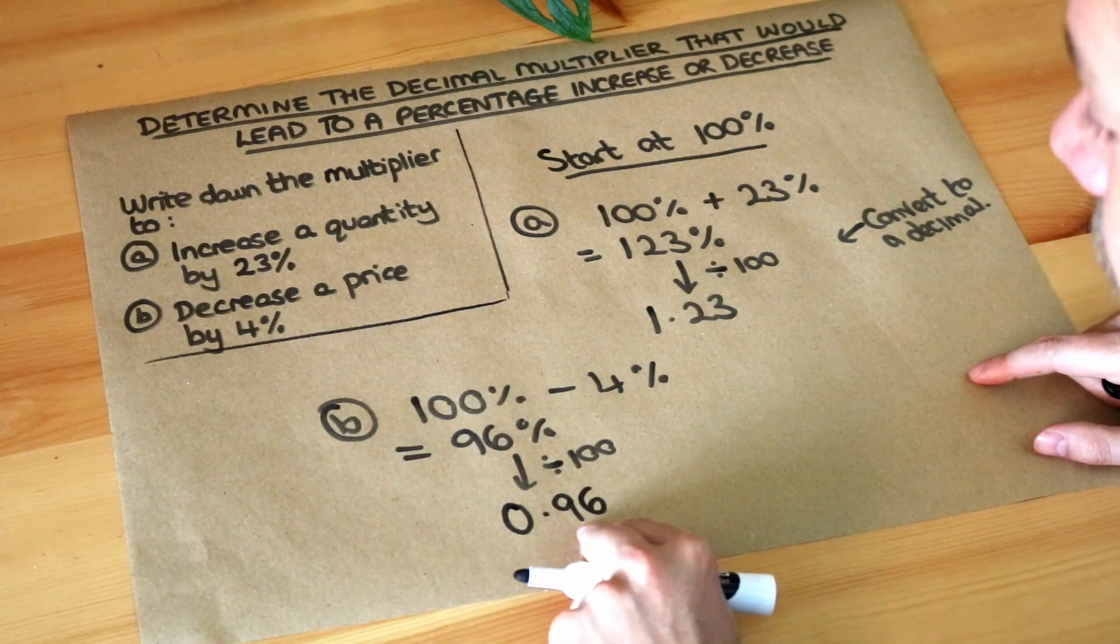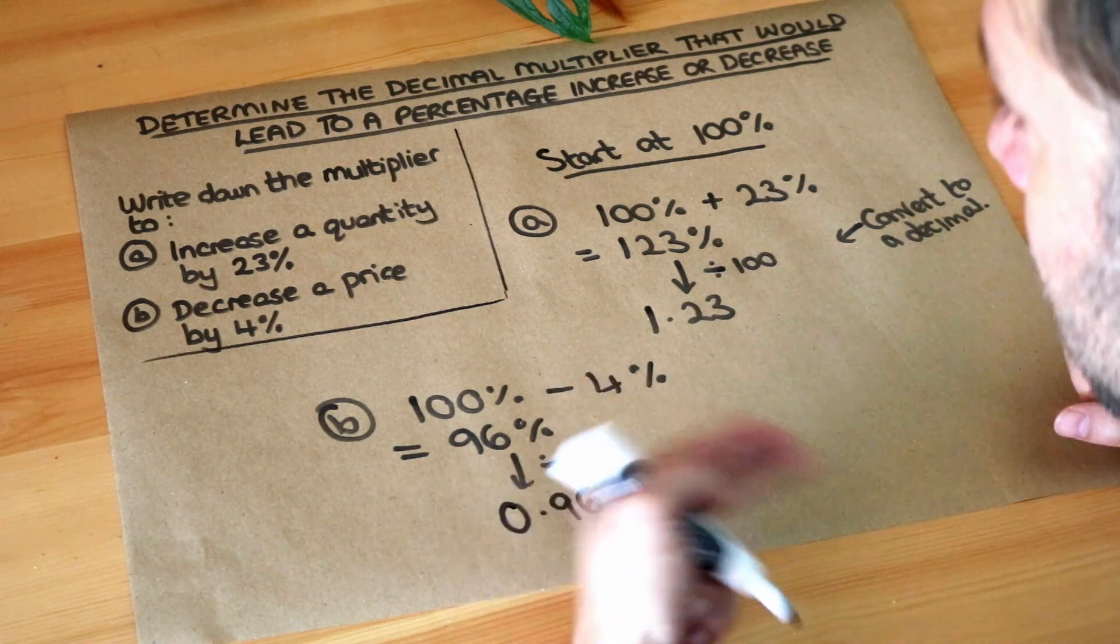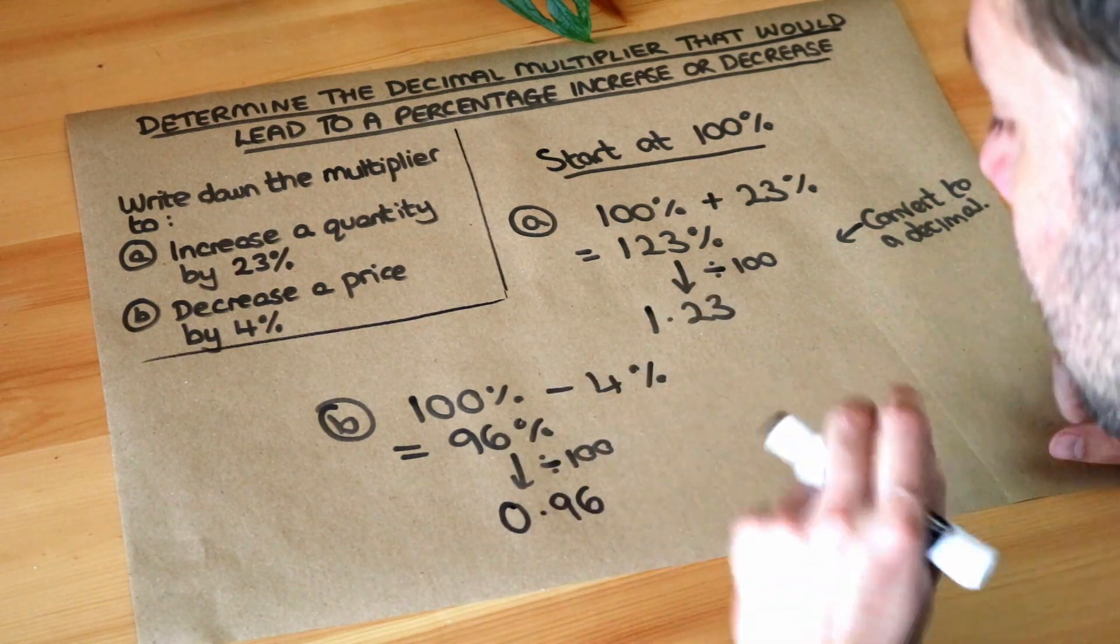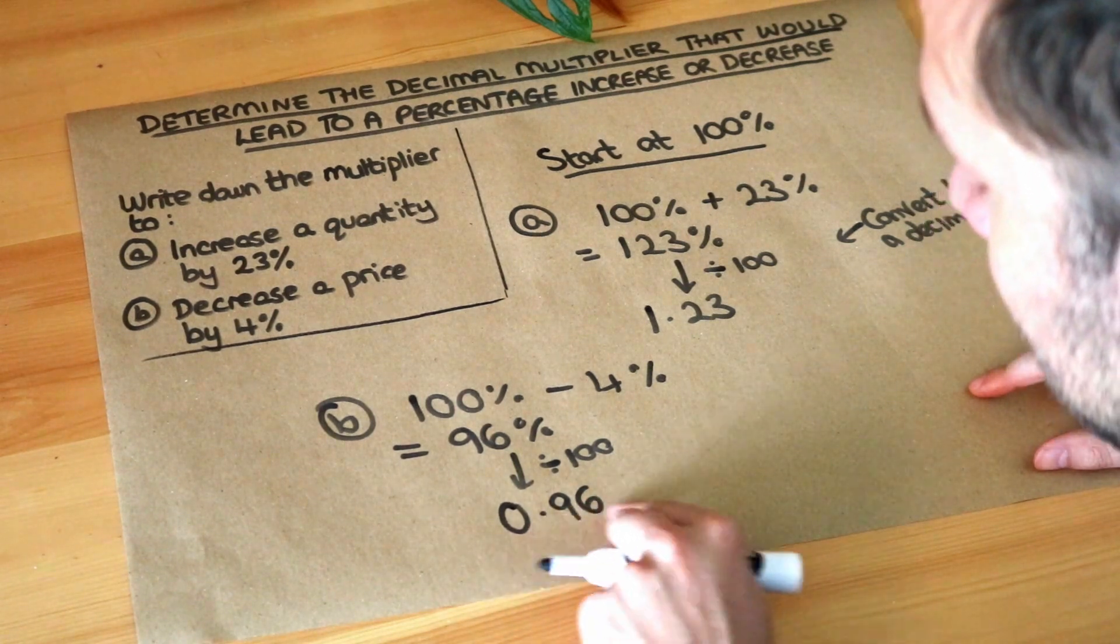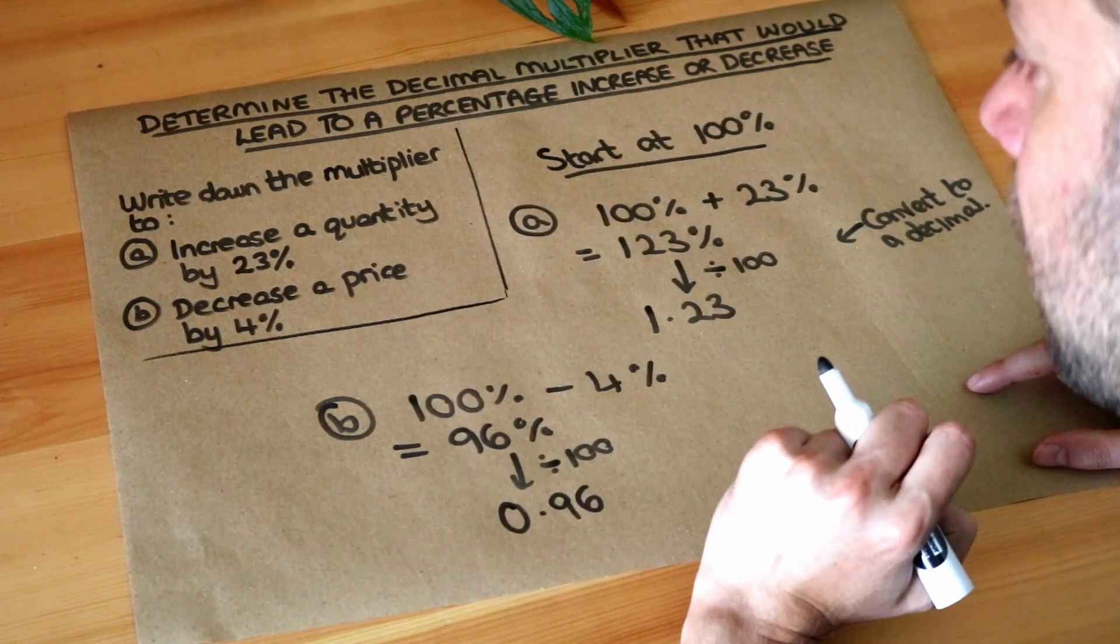And it kind of makes sense if you think about it. If I was to multiply a number by 1, it will stay at the same value. But if you multiply by a number just less than 1, so 0.96 is just less than 1, it's going to just slightly reduce the value.